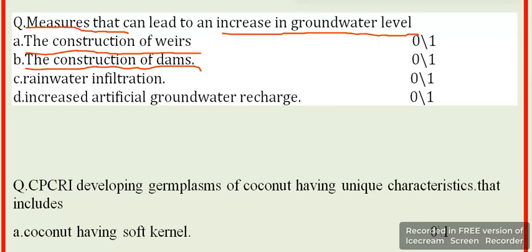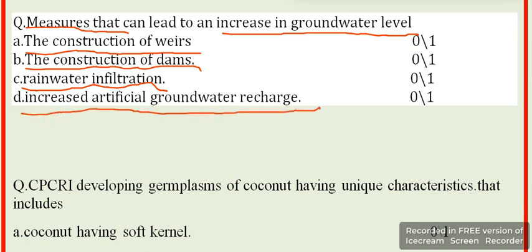Option C includes rainwater infiltration. Option D includes increasing artificial groundwater recharge. These are the key practices for increasing groundwater levels.